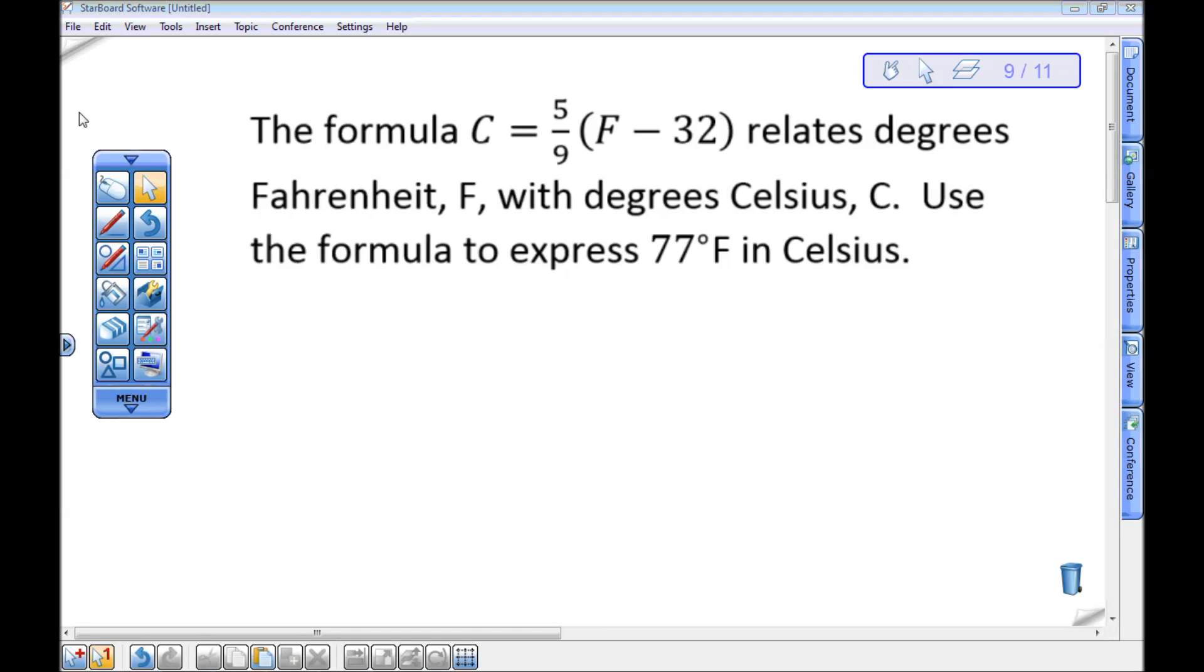Here's a formula you may have seen before. The formula C equals five ninths times the quantity F minus 32 relates degrees Fahrenheit, F, with degrees Celsius, C.